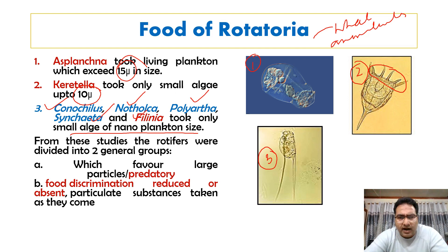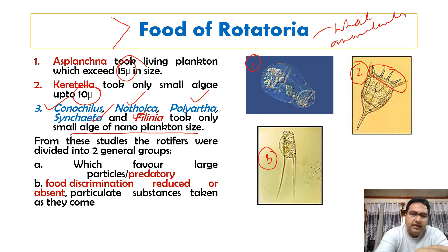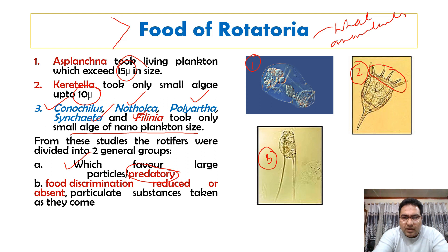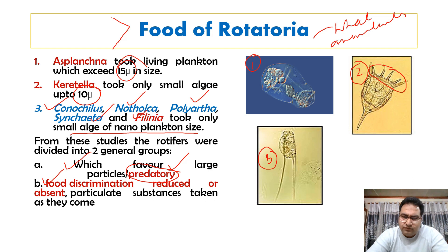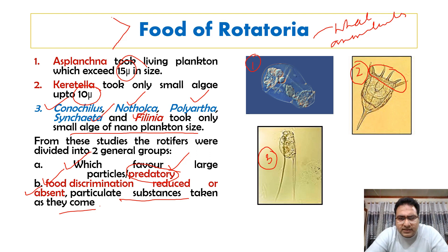From these studies on the food habits of Rotatoria, these organisms were divided into two groups based on food preference. The first group favoured large particles and were predatory in nature. The second group showed reduced food discrimination — they had no particular preference, and took particulate substances as they came in the water, whatever was found suspended.